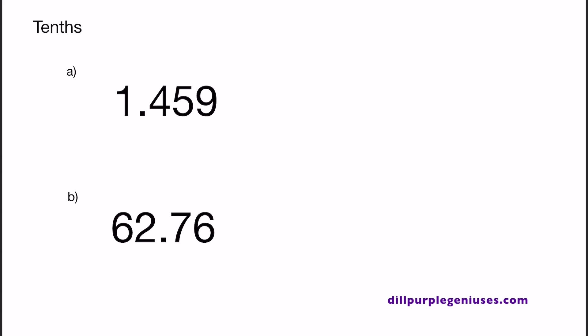In A, we have 1.459. First, let's identify the number that is in the tenths place. 4 is in the tenths place. To determine whether we need to round this number up or down, let's look at the number that is to the right of 4, which is 5. Since 5 is next to 4, we need to round this decimal up. Any number that is to the left of the number we're trying to round needs to stay the same. So we have 1 point, and since 5 is to the right of 4, we round up. So instead of 4, we now have 1.5.